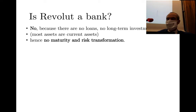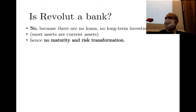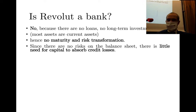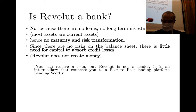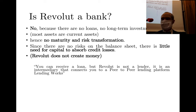Since most assets are current assets, there is no maturity transformation and no risk transformation — risk is somewhat correlated with maturity. Since there are no risks on the asset side, there is no need for capital to absorb credit losses. Revolut doesn't create money. The core banking activity — taking deposits and granting loans — is absent.